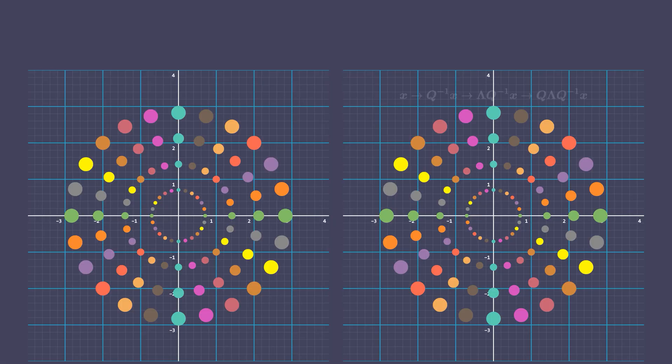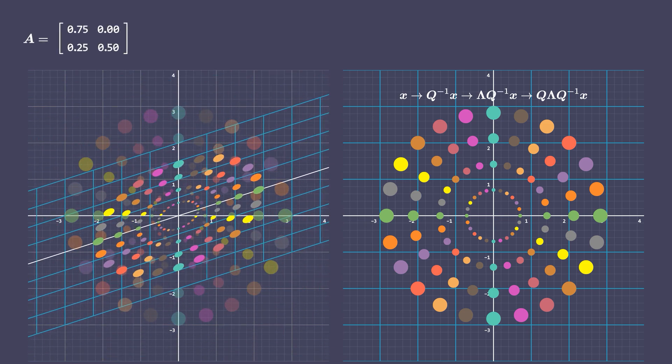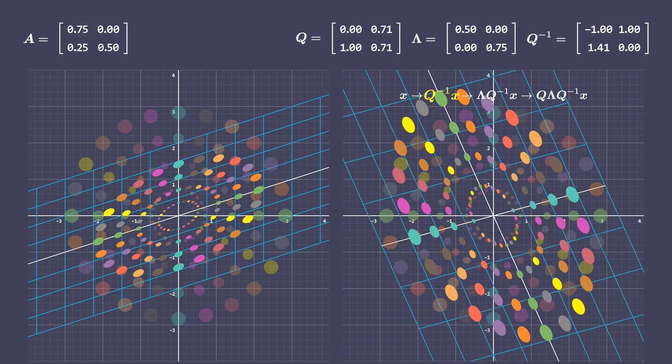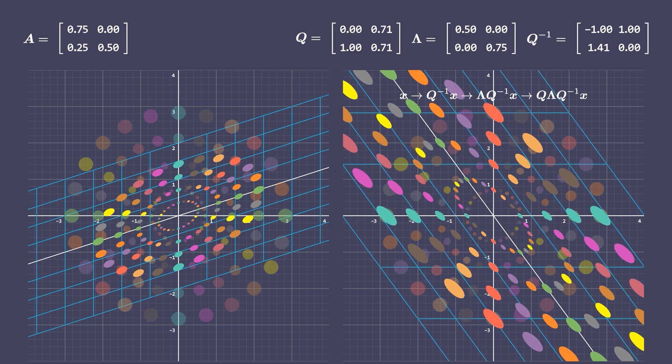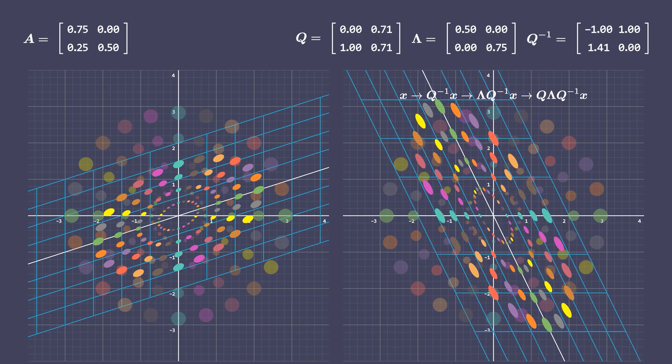Now let's understand eigendecomposition geometrically. The column on the left shows the space transformed by A. The column on the right shows the same transformation arrived at by sequentially multiplying with Q inverse, lambda, and Q components. Let's apply matrix A. Notice the transformation by A in the space in the left column. Now I need your full attention on the space in the right column. Note how the first transformation Q inverse X mostly rotates the space into an orientation